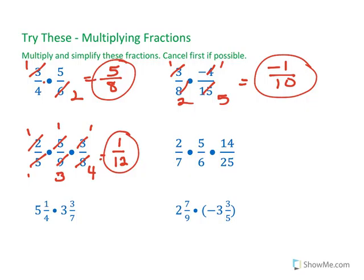Now, I can do 5 and 25, and 7 and 14, and 2 with the 6, and that's good. 2 over 15.